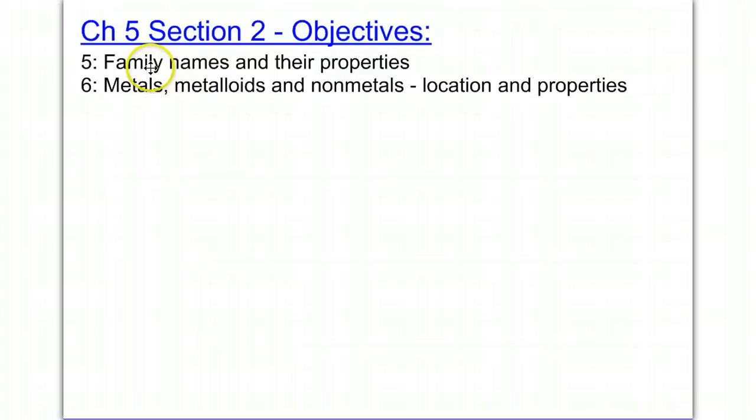If given the name of an element, you should be able to identify its family name and its properties based on its location on the periodic table. You should also be able to distinguish between metals versus metalloids versus nonmetals.